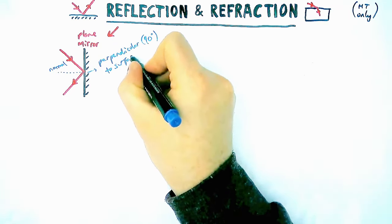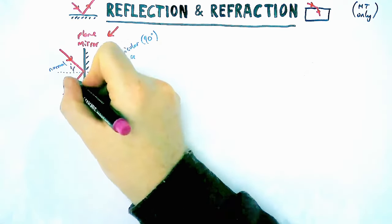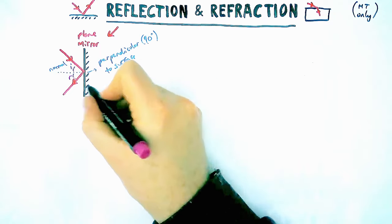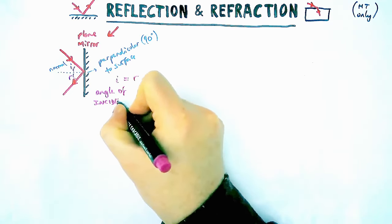Now if we draw in what's called a normal line, which is an imaginary line 90 degrees to the surface, we can see that the angle the wave makes between the normal and itself is equal to the angle it makes between its reflected ray and the normal.